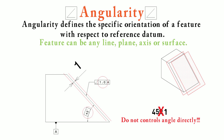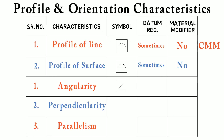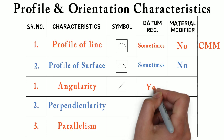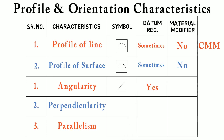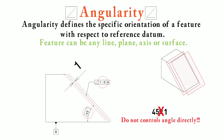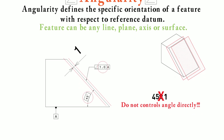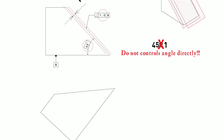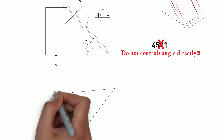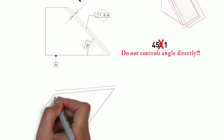We saw that we have to control angularity with respect to some datum, so datum requirement for this is yes. About material modifiers, we use them sometimes. We can measure angularity with the help of a height gauge. Since this surface should lie between 1mm planes, we will keep this part at a 45 degree angle and measure the ups and downs with the help of a height gauge.